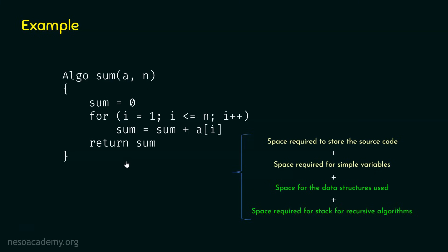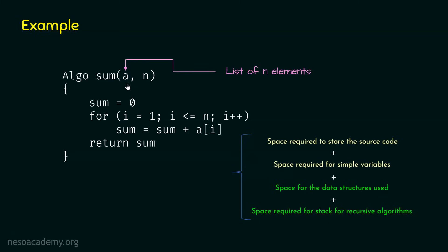The space required for simple variables is also constant. In this source code, we have three simple variables: n, sum, and i. The space required to store these variables is constant, so we will not consider them. This algorithm is not recursive — it is iterative, as it involves a loop, and it does not call itself within its own body. The only relevant factor is the space for the data structure A.